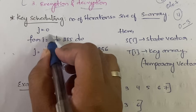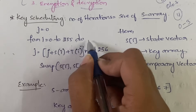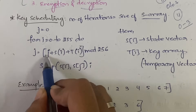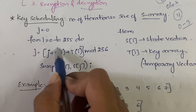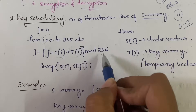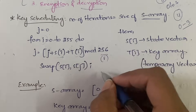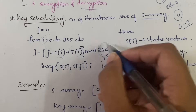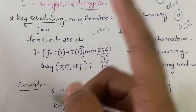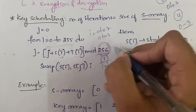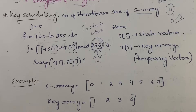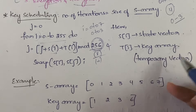The key scheduling algorithm is: initialize j = 0, then for i = 0 to 255, compute j = (j + S[i] + T[i]) mod 256, then swap S[i] and S[j]. Here S[i] is the state vector and T[i] is the key array (temporary vector). If the size is 8, the loop runs from i = 0 to 7 and you use mod 8. If the size is 4, the loop runs 0 to 3 and you use mod 4.